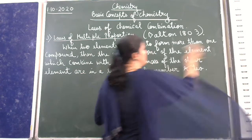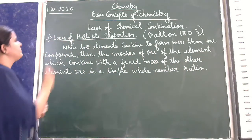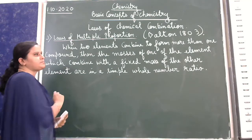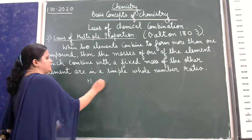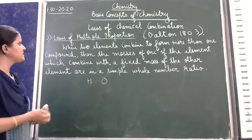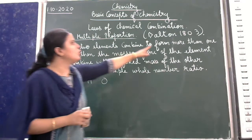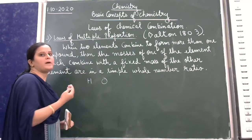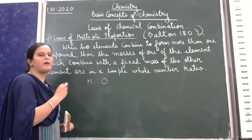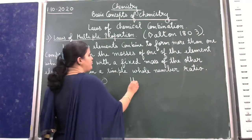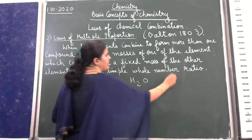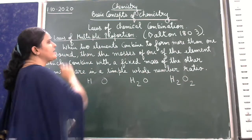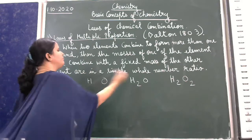Let me explain. If I take hydrogen and oxygen, these two elements are forming more than one compound. What are those compounds? They can form water (H₂O), and they can also form hydrogen peroxide. So when hydrogen and oxygen are combining, they can form more than one compound.